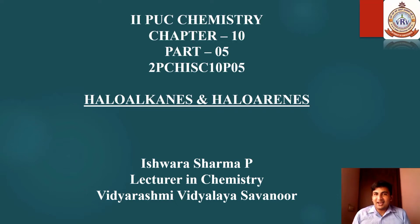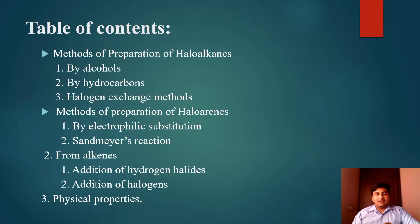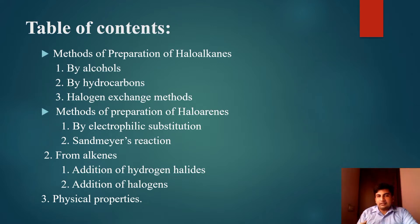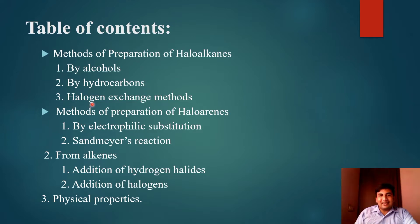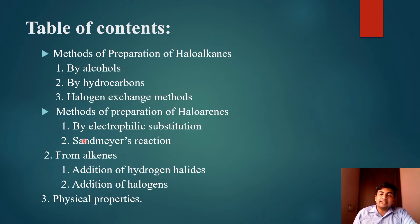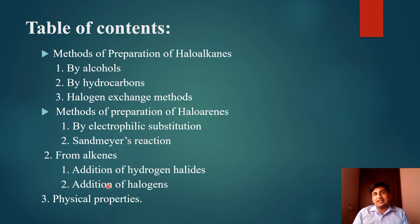Namaste students. This is Part 5 of haloalkanes and haloarenes. In this part we are going to study the methods of preparation of haloalkanes and haloarenes. There are several methods: from alcohol, from hydrocarbons, halogen exchange method, and for haloarenes — electrophilic substitution reaction and Sandmeyer's reaction, and from alkene — addition of hydrogen halide and addition of halogen. The last part covers physical properties of haloalkanes and haloarenes.